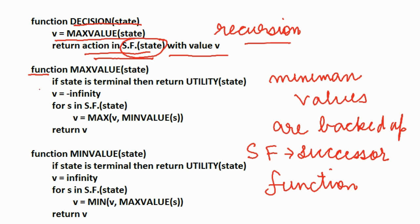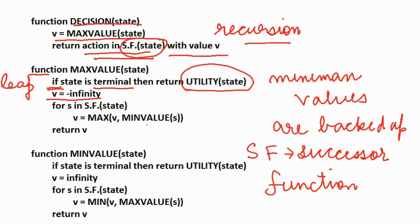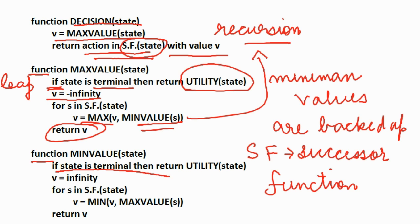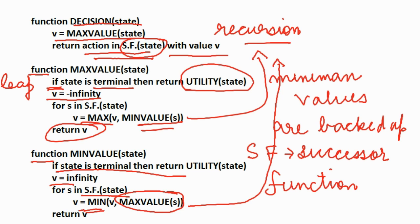The max-value function takes as input a state. If the state is a terminal or leaf node, it returns the utility of the state. Otherwise, it sets v to minus infinity and finds the maximum of all the min-values of successor states. The min-value function similarly takes a state as input; if the state is terminal it returns the utility, and for all states in the successor function of the Min node, it returns the minimum of all the max-values of successor states. Both functions are computed recursively.